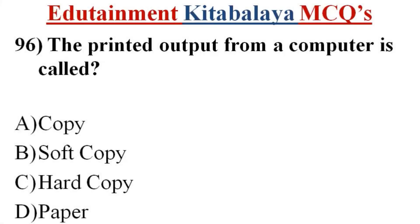Question number 96. The printed output from a computer is called? A. Copy. B. Soft copy. C. Hard copy. D. Paper. Correct answer is C. Hard copy.